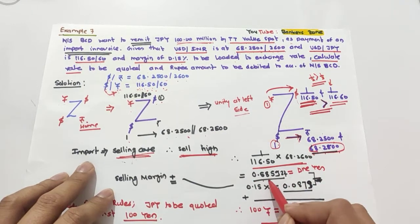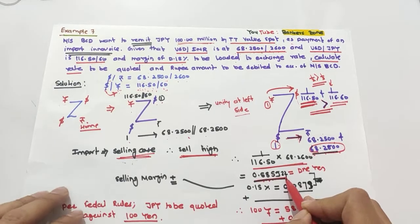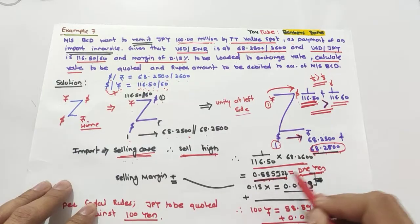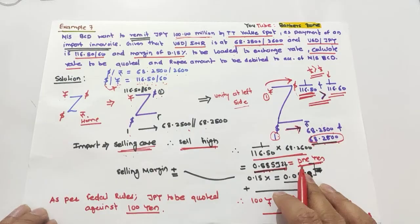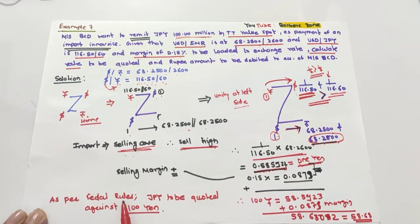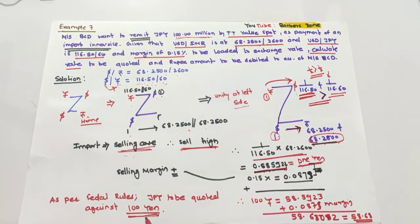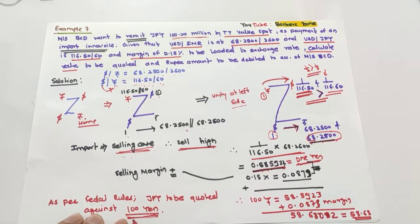Multiplying the selected values: (1/116.50) × 68.2600 gives 0.58585922, meaning 1 yen equals 0.585922 rupees. However, as per FEDI rules, Japanese yen must be quoted per 100 yen, not per single yen, because its value is too small.